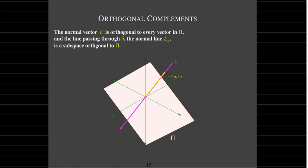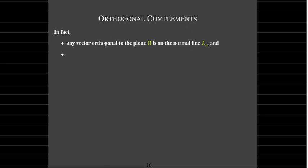What does it mean for subspaces to be orthogonal? That means any vector orthogonal to the plane pi is on the normal line, and any vector orthogonal to the normal line lies in the plane pi. This example already gives us the key ingredients of what orthogonal complements are.